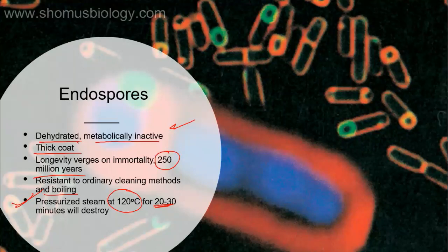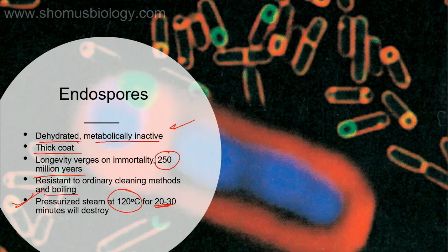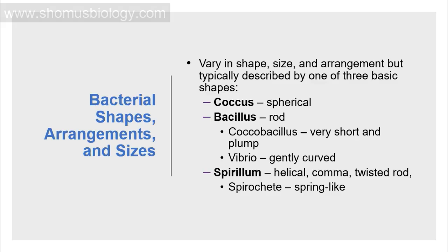Generally, pasteurization is effective enough to kill the spores if you boil the mixture containing the spore at 120 degrees Celsius for 20 to 30 minutes at constant pressure. Only under those conditions can you kill the spore.